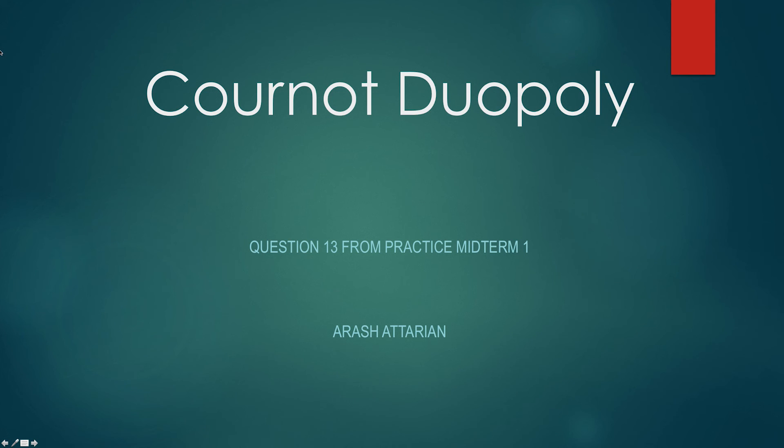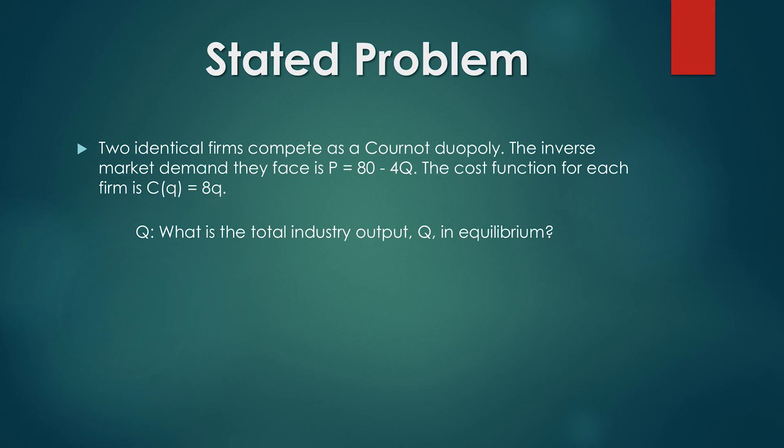The problem we face today is a Cournot duopoly, question 13 from practice midterm 1. The stated problem is that two identical firms compete as a Cournot duopoly. The inverse market demand they face is P equals 80 minus 4Q. The cost function for each firm is C(q) equals 8q. The question is, what is the total industry output Q in equilibrium?